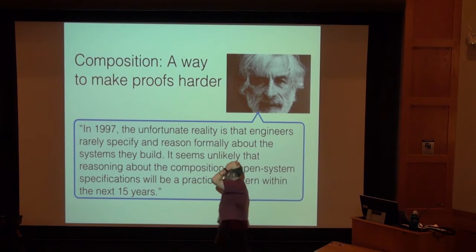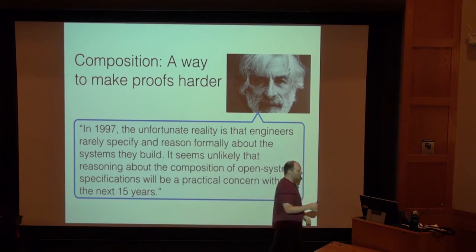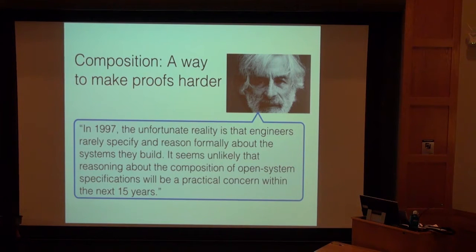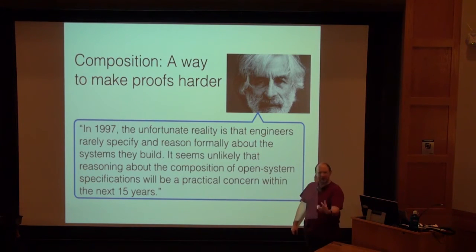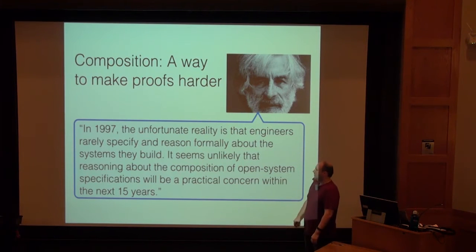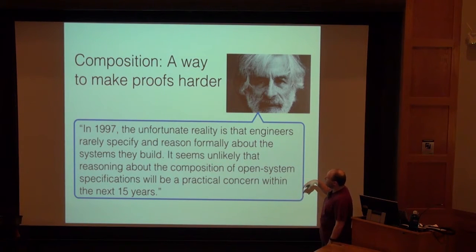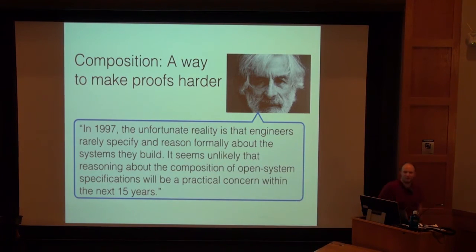Does anybody know who this guy is in the top left? He's a Turing Award winner — Leslie Lamport. Back at the end of the 20th century, Lamport had this attack on modular approaches. He had a paper titled 'Composition: A Way to Make Proofs Harder.' His argument was that when you want to do things modularly, you have to think more. It's a lot easier if you don't abstract away the details and just have access to them. He said something like nobody's going to care about modularity in the next 15 years — and basically he was right, because it's been more than 15 years since he said that.